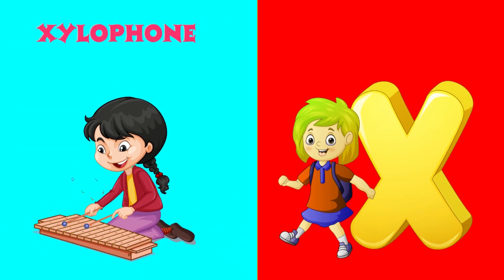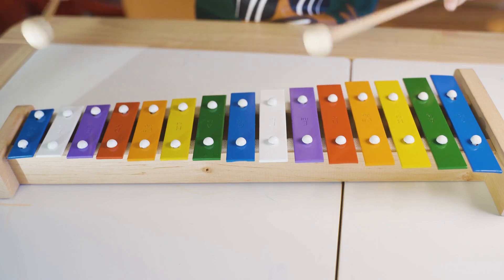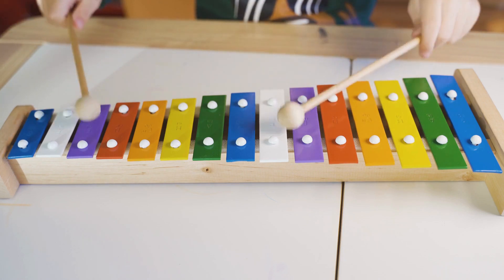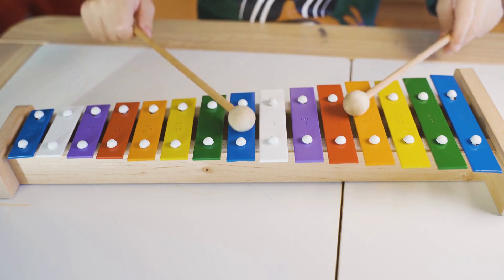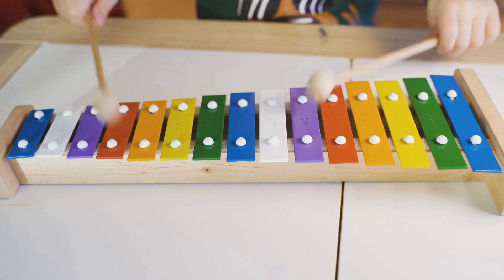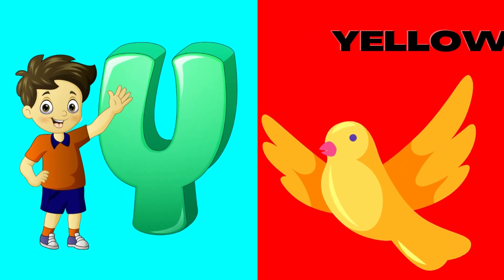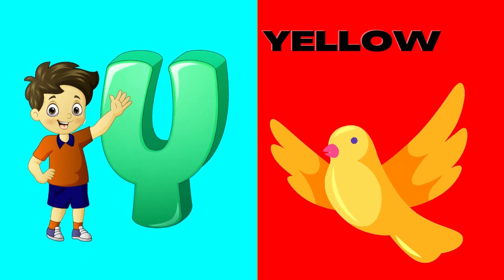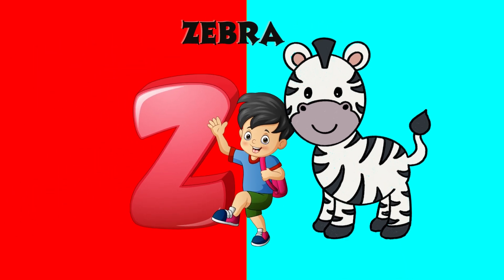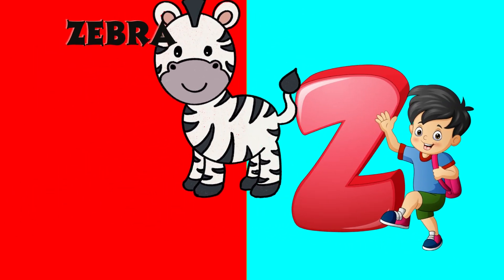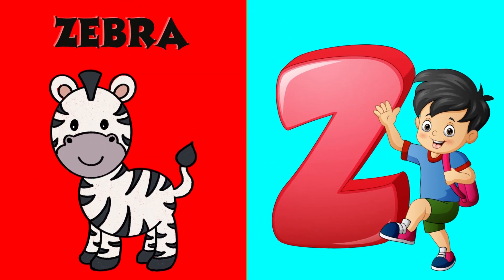X is for xylophone, z-z-xylophone. Y is for yellow, y-y-yellow. Z is for zebra, z-z-zebra.